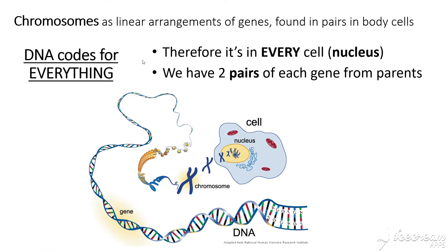Firstly, they want you to know that chromosomes are linear arrangements of genes and they are found in pairs in body cells. So what is this word chromosome? The word chromosome is basically 'chroma', which is colour, and 'soma', which is body — so a coloured body. When they first looked down the microscope and discovered these things, that's how they appeared to be, so that's where the name comes from.